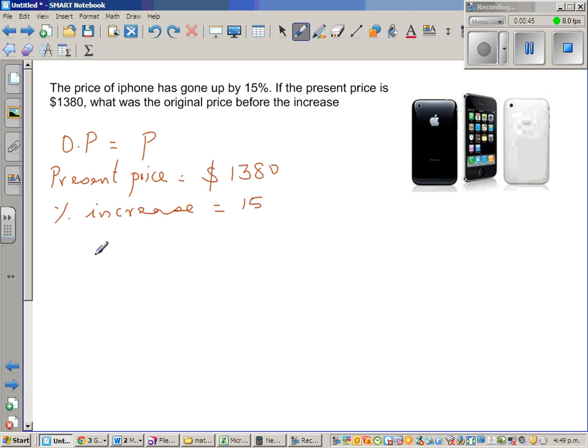Now here, we can say P is the original price and there's an increase of 15%. You want to find the original price. You want to go backwards. So let us go the straight way first.